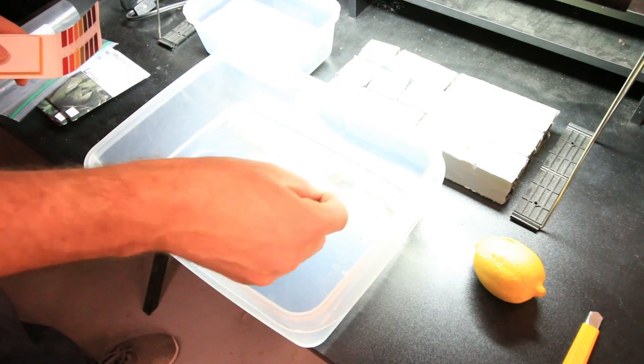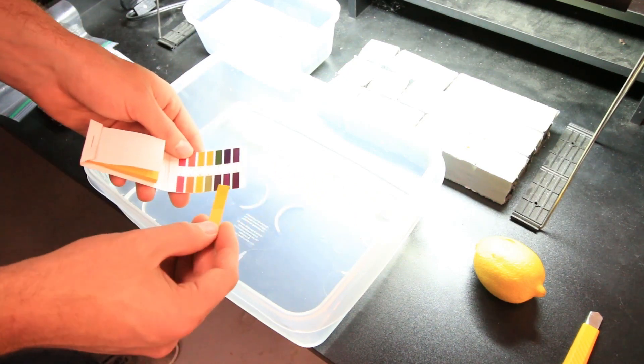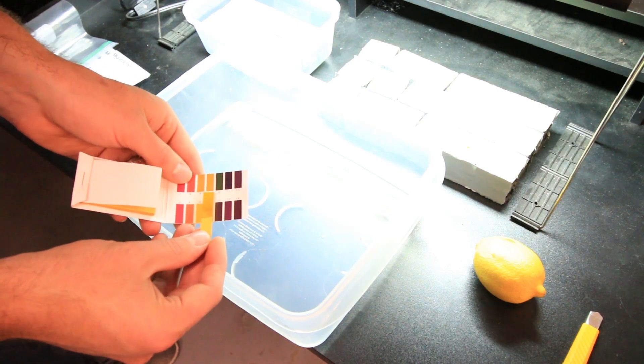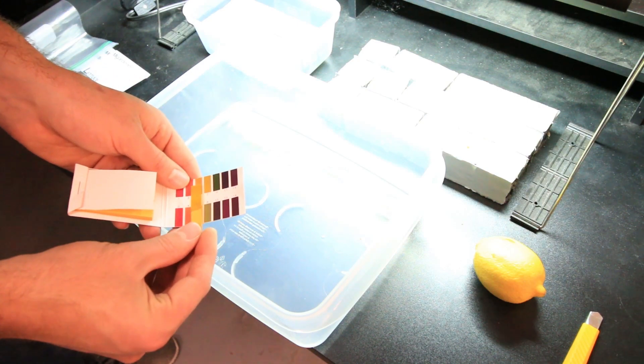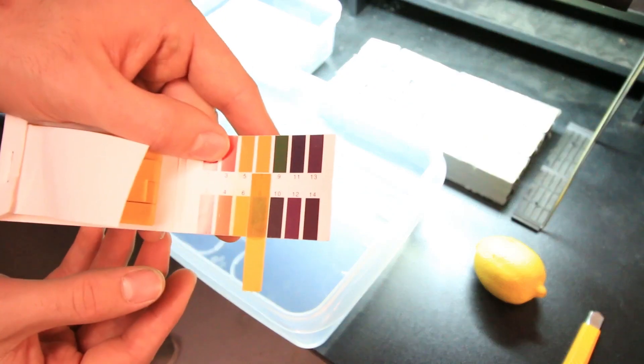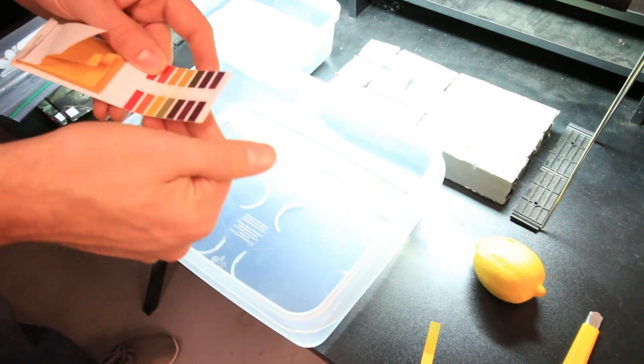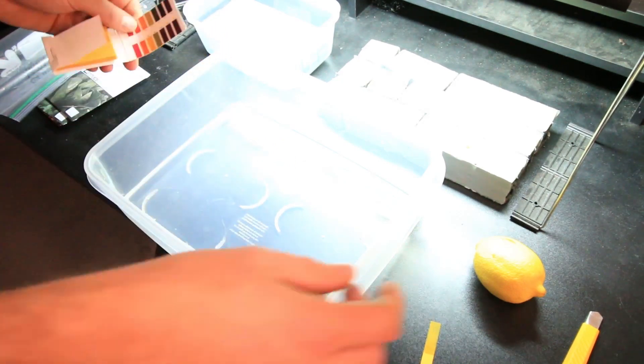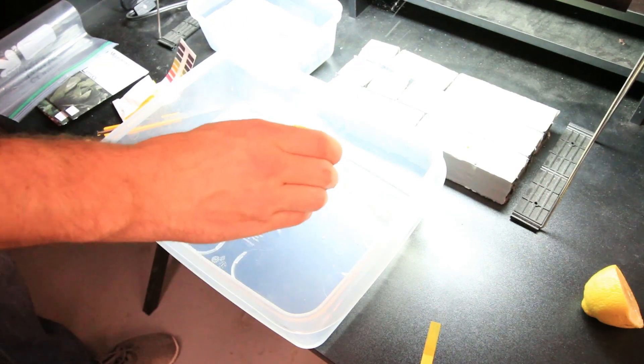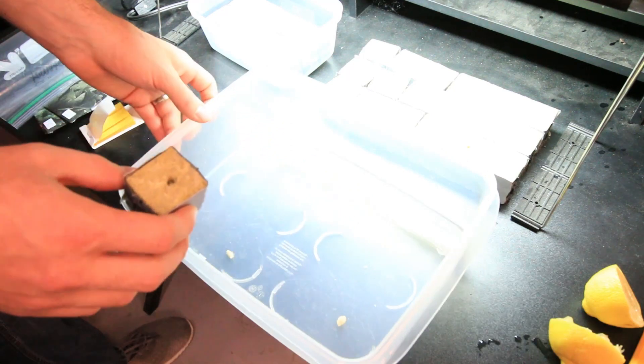Okay, so the first thing I'm going to do is test the pH of our water just so I can see where we're at right now. Right now we are at right around a seven, pretty neutral. So a seven is good, but we need to get down to right around 5.5. So we're going to add some lemon. We probably won't need the whole lemon because lemons are pretty acidic.